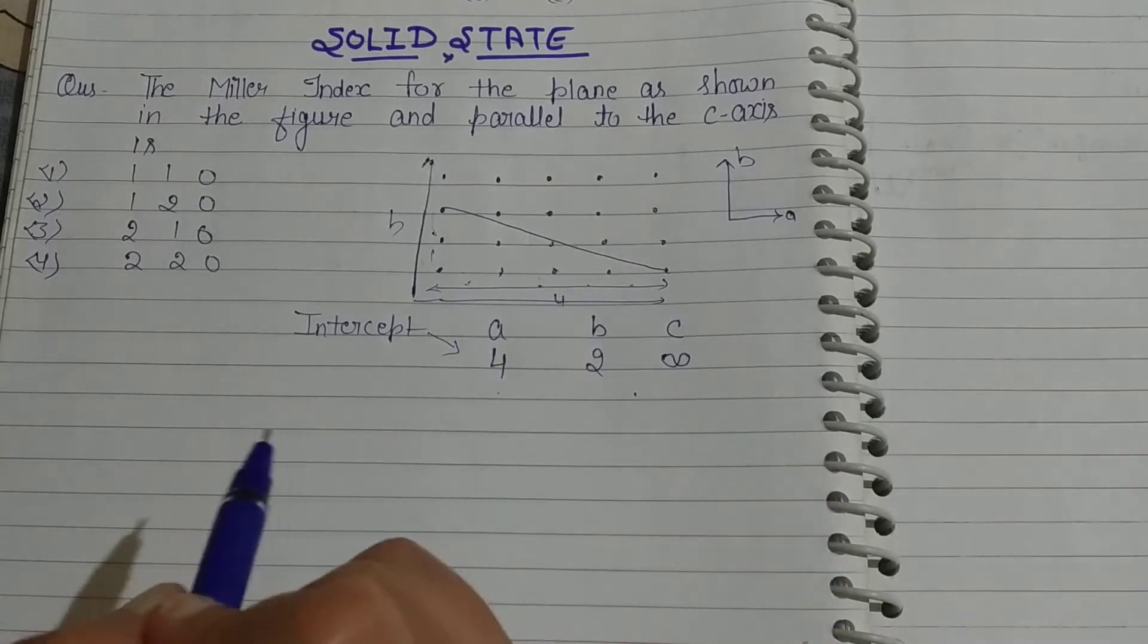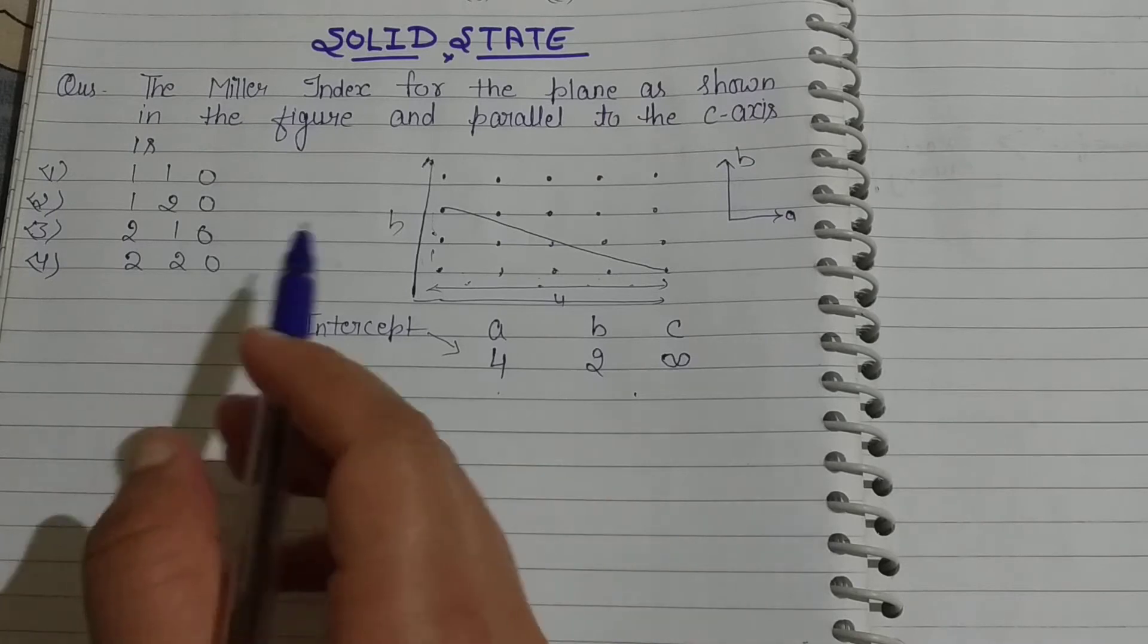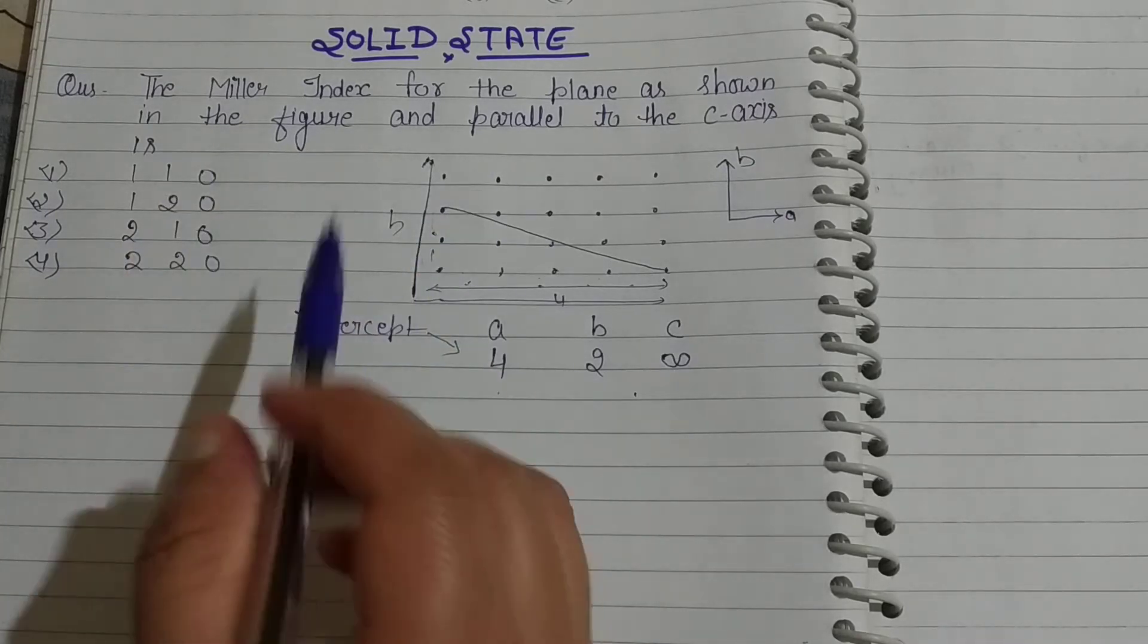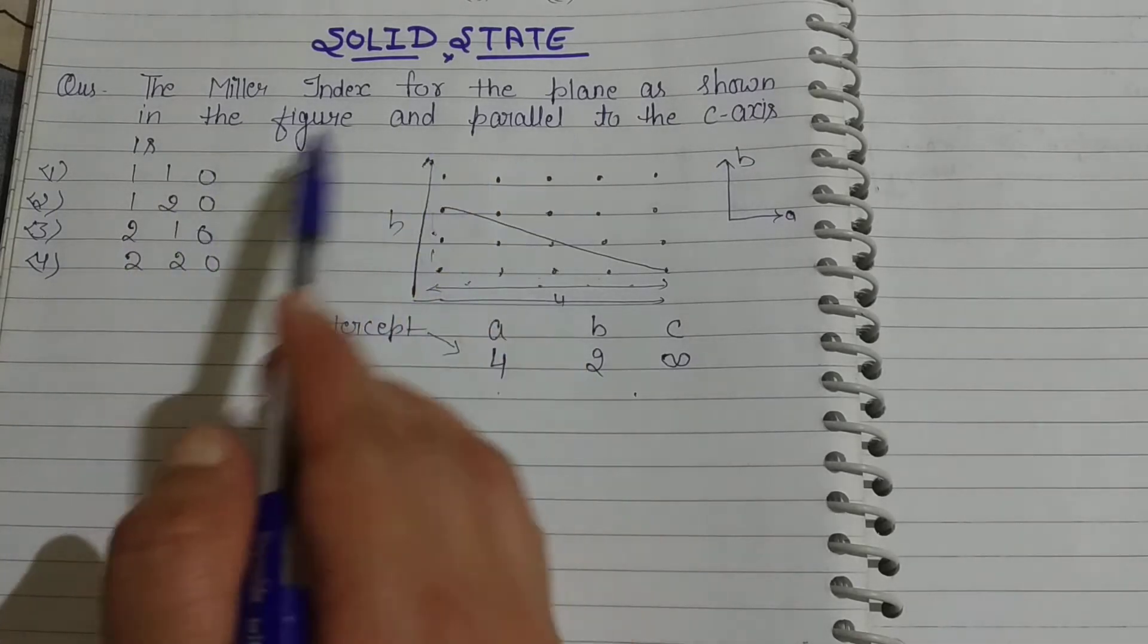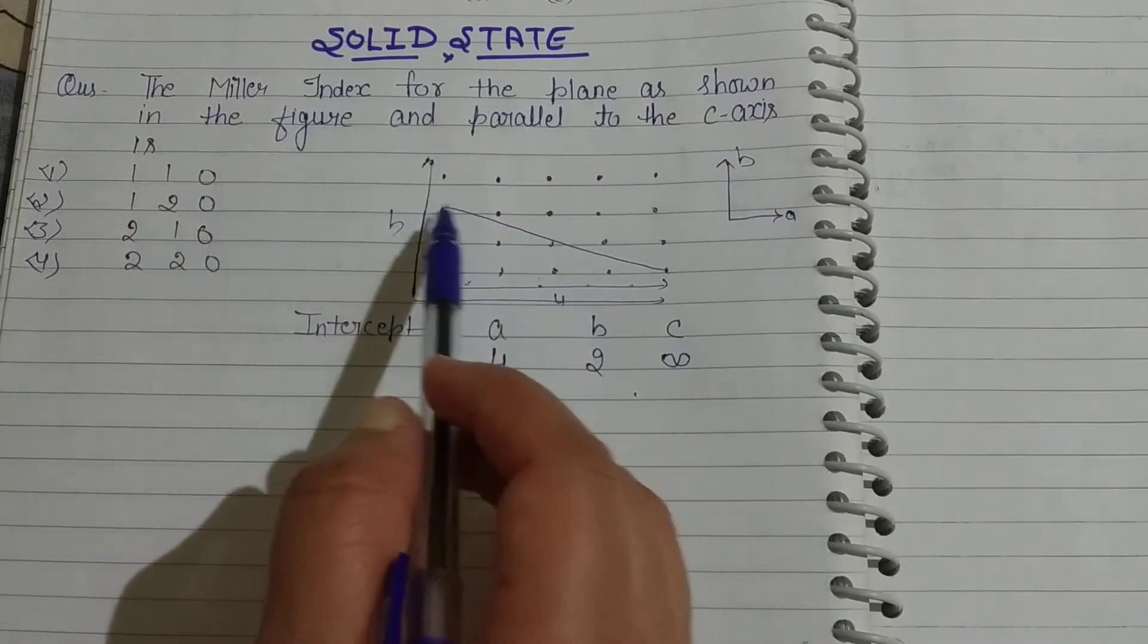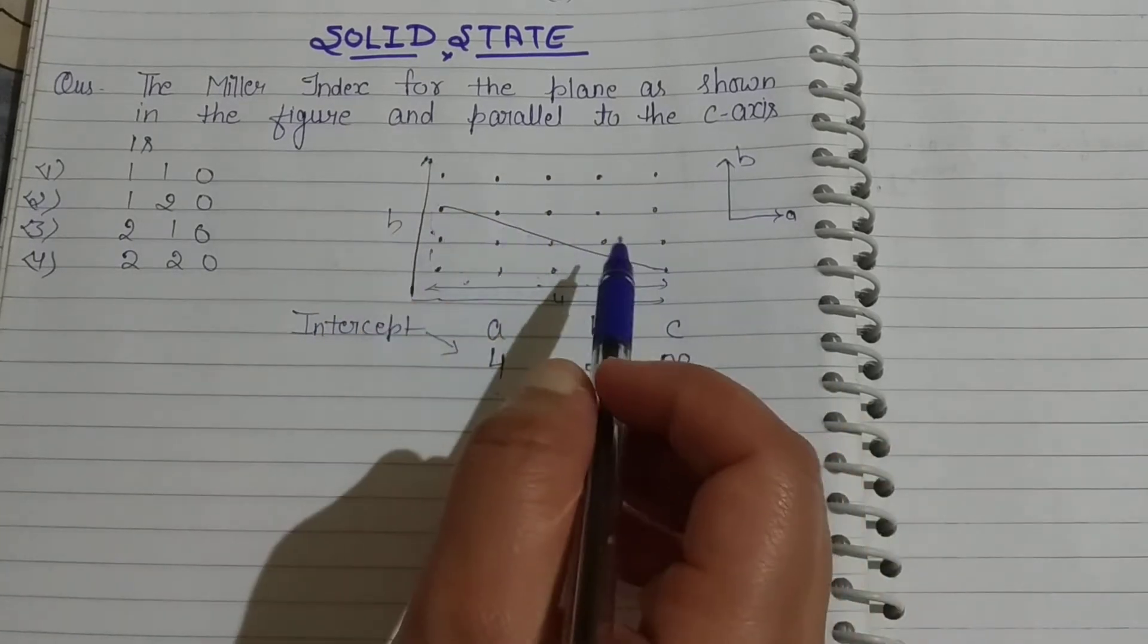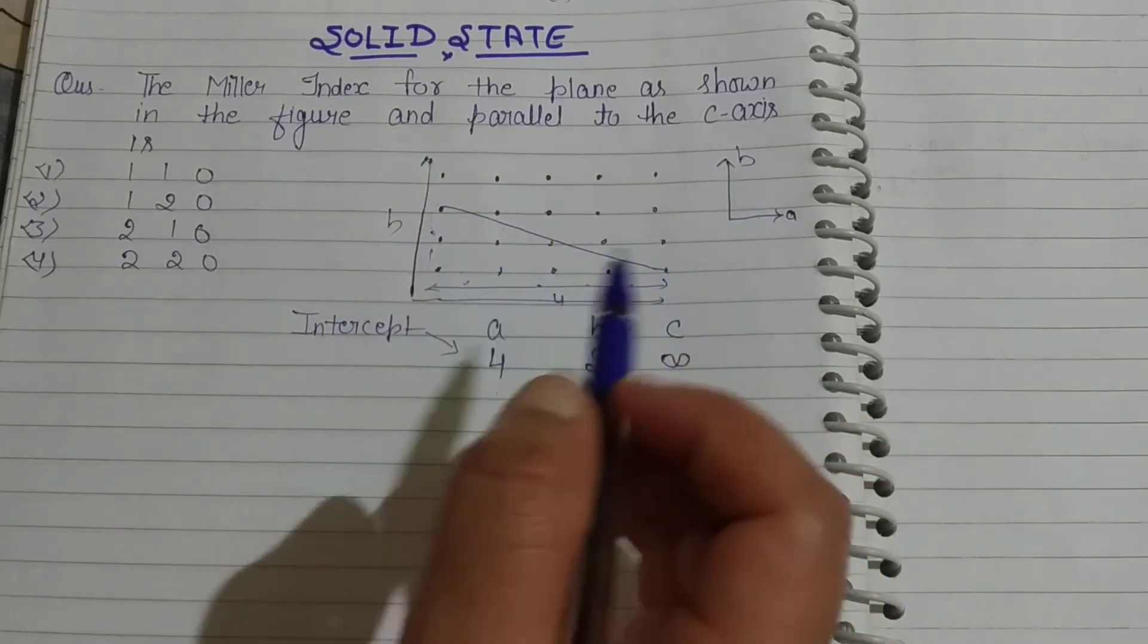First we have already discussed a question which was related to Bragg's equation. This question is from Miller Indices, so we will find the Miller Indices for the plane as shown in the figure and parallel to the C axis. This is the C axis.